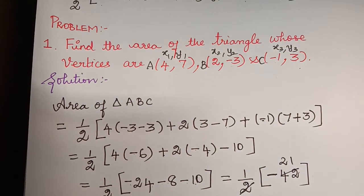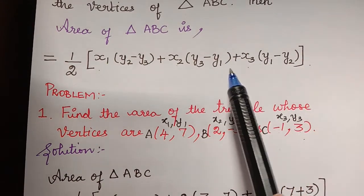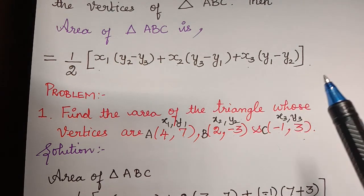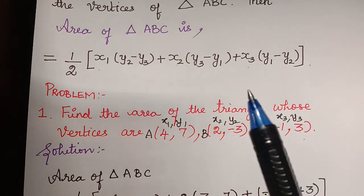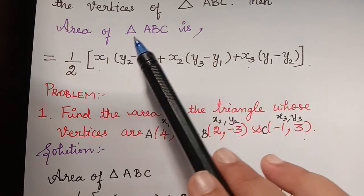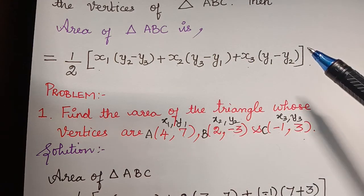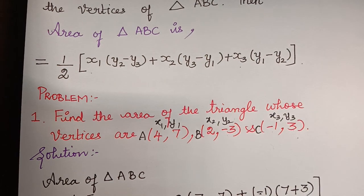I would like to add a note: if we want to prove that 3 points are collinear — meaning all three points lie on the same straight line — we can prove that the area of the triangle formed by those points is zero. If the area of the triangle is zero, the three given points are said to be collinear. We shall see this concept in our upcoming video. Thank you.